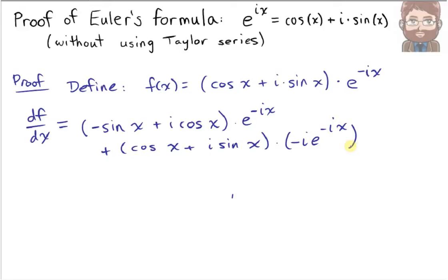Now we'll want to simplify this, so we're going to factor out the e to the negative ix, and we'll be left with negative sine x plus i cosine x. Now distributing this negative i through these terms, we'll get minus i cosine x, then negative i times i, which is negative 1, in other words positive sine x, all of that times e to the negative ix.